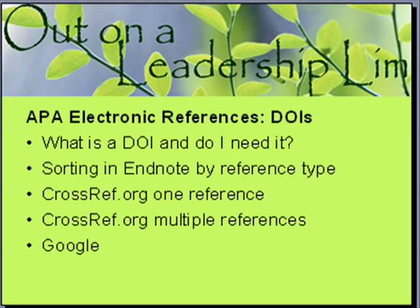In this video we are going to talk about APA electronic references, specifically journal articles that need the DOI. A DOI is a digital object identifier, and you need it for every journal article that you can find a DOI for.